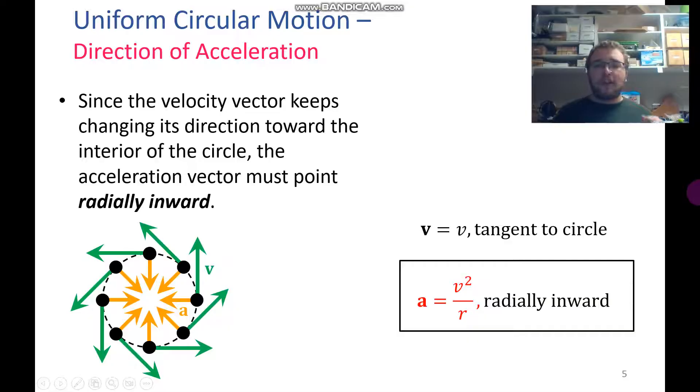Now if you imagine a tennis ball on a string that you're swinging around, if at any point the string breaks, the tennis ball is going to keep going in that direction. It's going to keep going in that tangential velocity vector. So that string is what's keeping it in the circle. That string is what's changing the velocity. It's what's accelerating it.